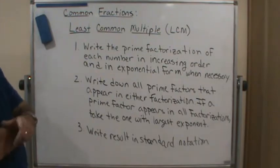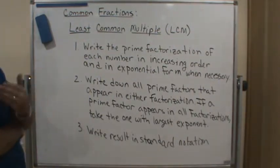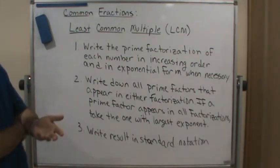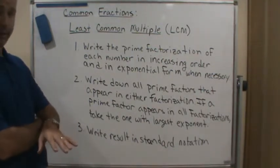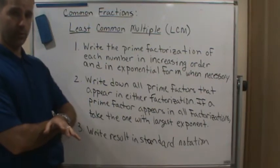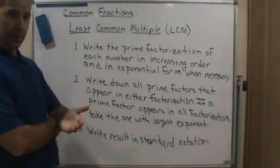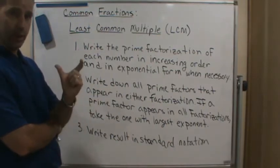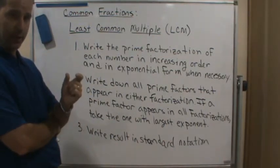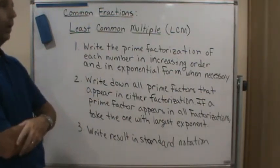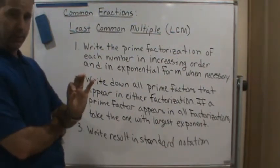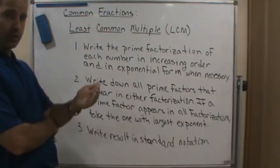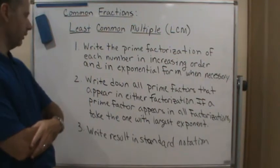First, you want to write the prime factorization of every number that you're trying to find the least common multiple of. Write the prime factorization of each number using exponential notation if necessary. So if it's a repeated factor, you want to combine that and write it in exponential notation. Also, you want to order the prime factorization from smallest to greatest prime.